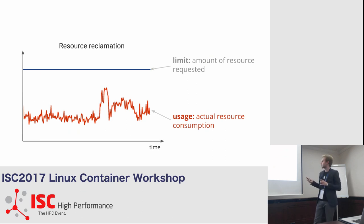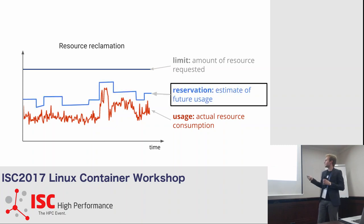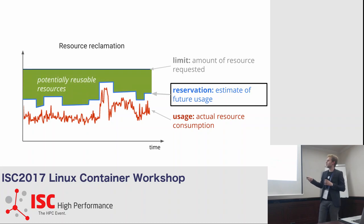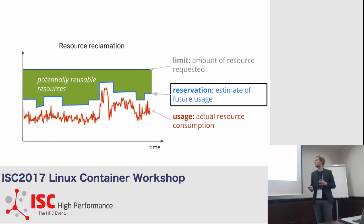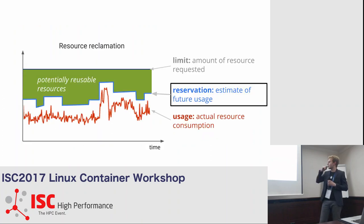This graph shows usage over time. The red line is actual usage, and the top line is our hardware limit. Below that is our reservation, which is managed by the scheduler and reserves some resources. The gap between reservation and actual usage is potentially reusable — we use this to run batch jobs, our non-production workloads. As you can see, many tasks get evicted in the non-production workload, mostly because of preemption: when we have a new peak, batch jobs get killed and we have to start all over again, losing resources.